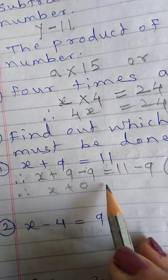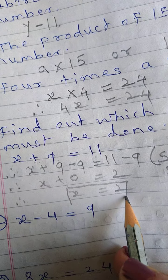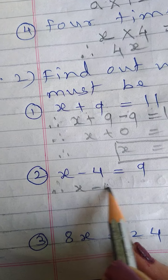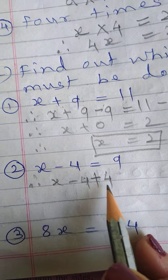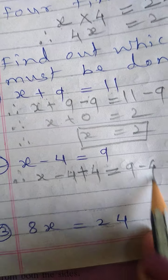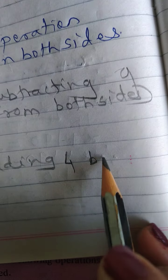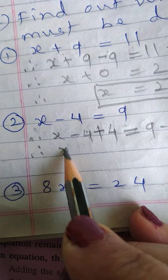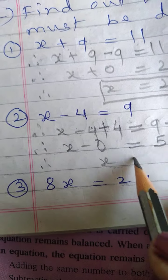Therefore, X plus 0 is equal to 2. So X is equal to 2. Second: X minus 4 is equal to 9. Therefore, X minus 4 — opposite operation of minus is plus. Same number but opposite operation. Adding 4 to both sides: X minus 4 plus 4 is equal to 9 plus 4. Therefore, X minus 0 is equal to 9 plus 4 equals 5 — wait, X is equal to 5.